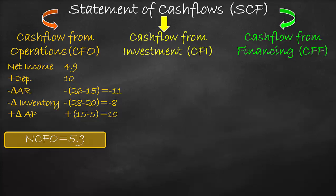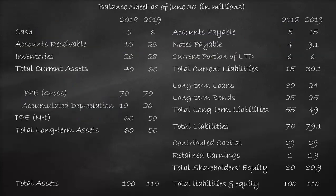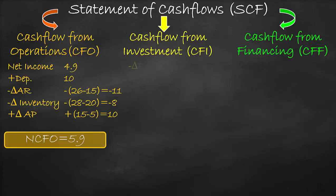Next, we estimate the second category: cash flow from investment, which refers to non-operating assets. In this example, we have only plant, property, and equipment, or PPE for short. We have two ways of estimating it — using PPE gross or PPE net. The first approach is a negative change in PPE gross, where we use the negative sign because there is a negative relationship between the change in assets and the change in cash. Negative (70 minus 70) equals zero.